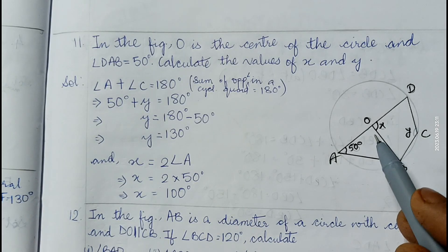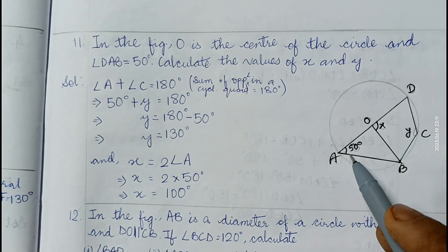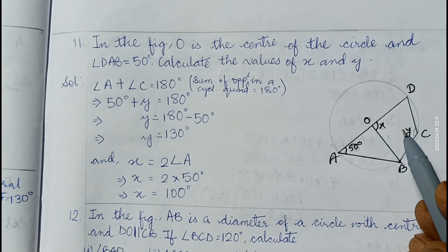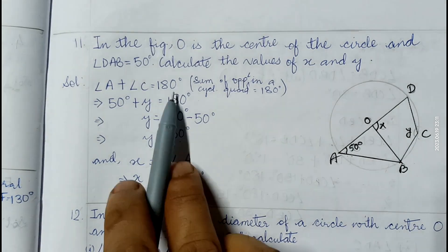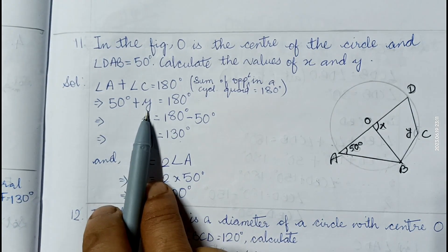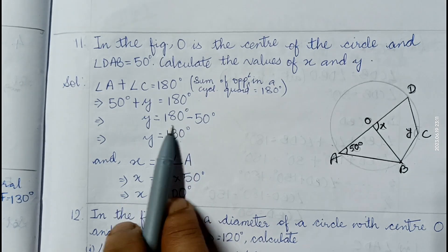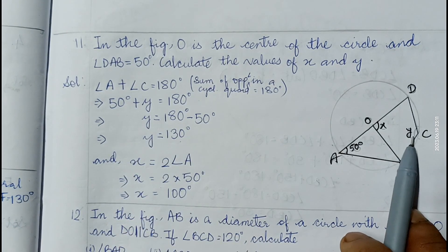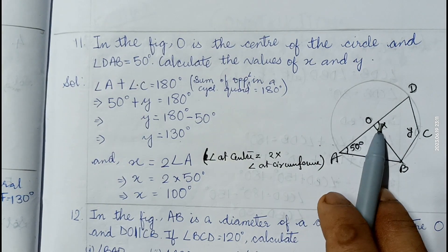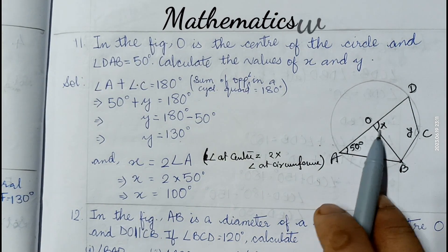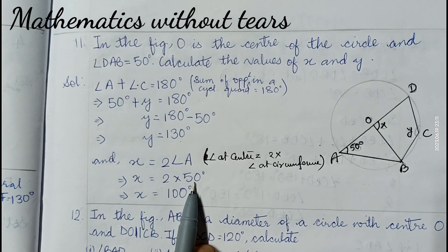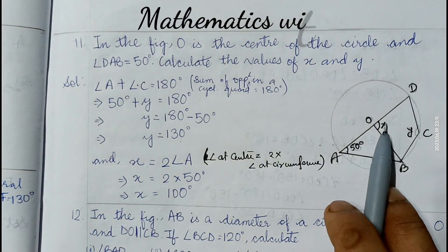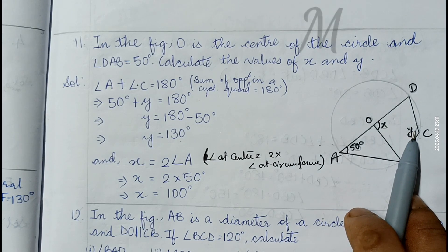Question number eleven: O is the center and angle DAB is 50 degrees; find X and Y. Since ABCD is a cyclic quadrilateral, angle A plus angle C equals 180, so 50 plus Y equals 180, giving Y equals 130 degrees. The angle at the center is twice the angle at the circumference, so X equals twice of angle A equals twice 50, therefore X equals 100 degrees.